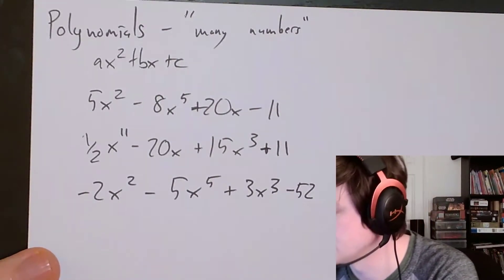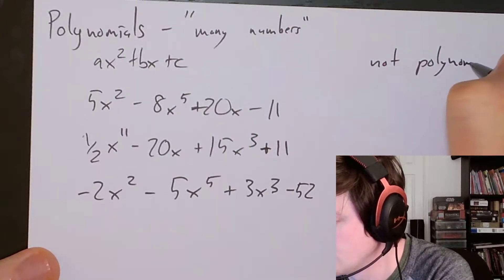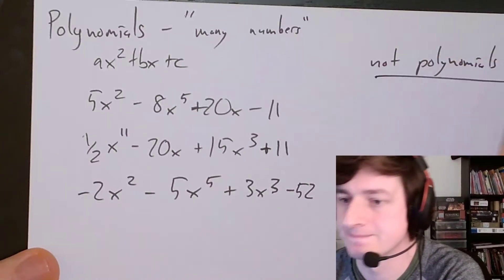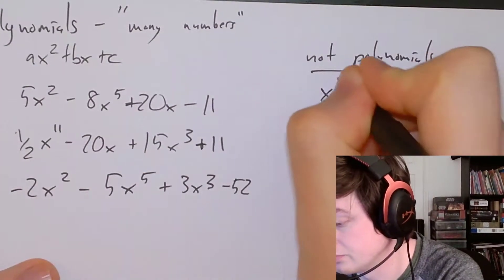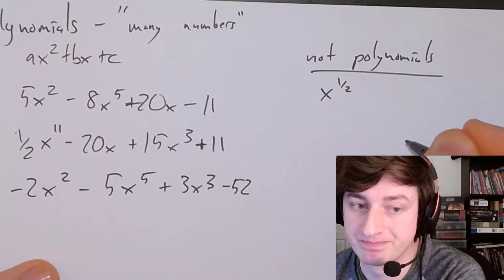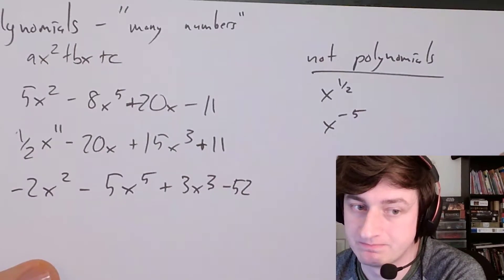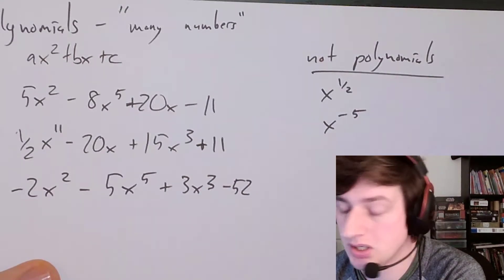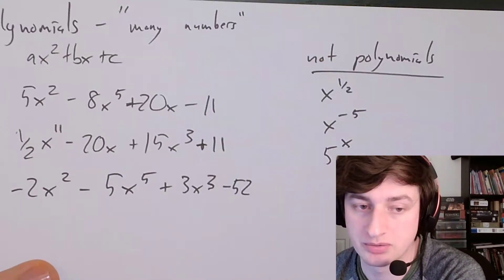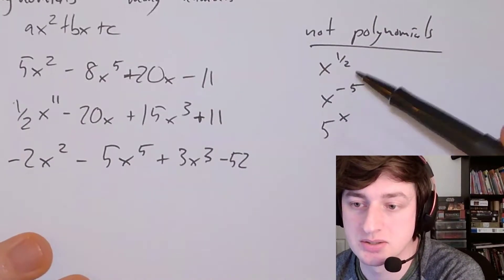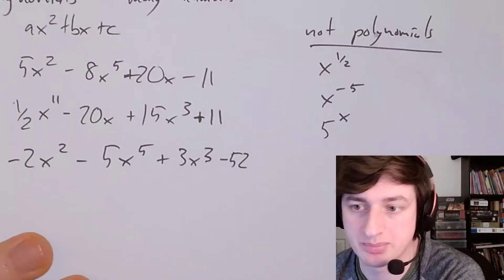Things that are not polynomials: if it's got a fractional exponent — not a polynomial. If it's got a negative exponent — not a polynomial. If it has x in the exponent — not a polynomial. If it has any of these things, regardless of what the rest of the function looks like, it's not a polynomial.